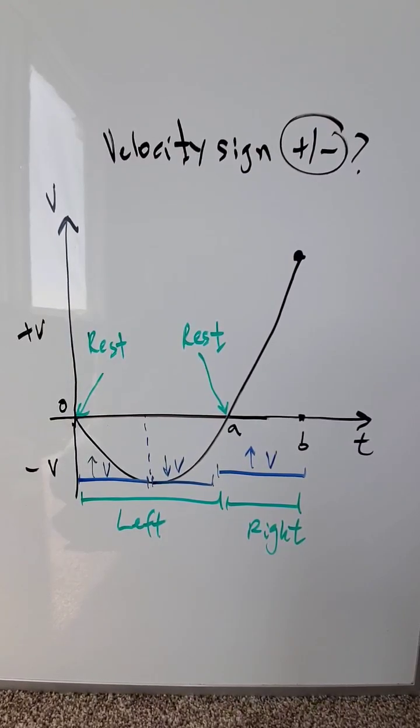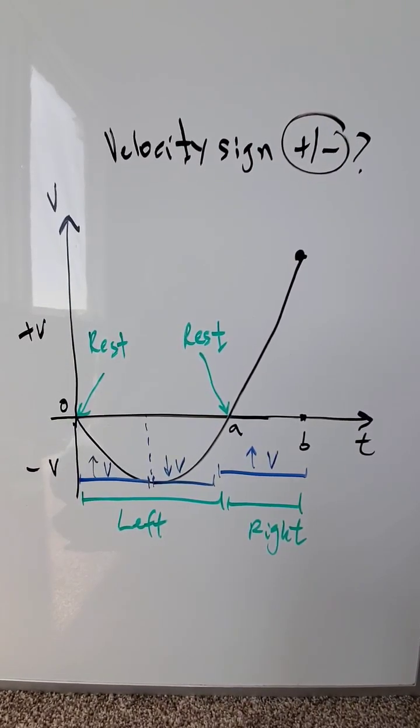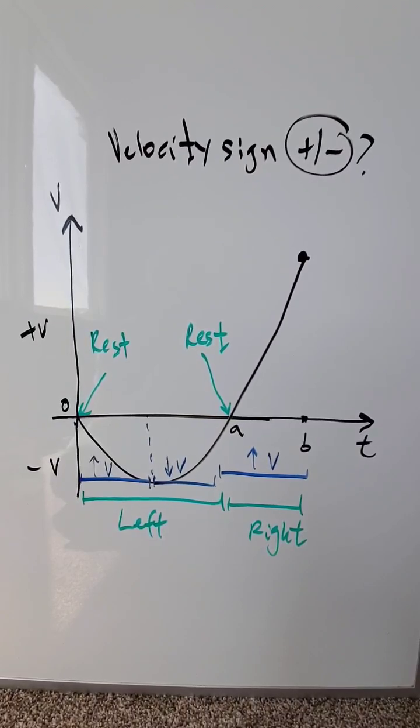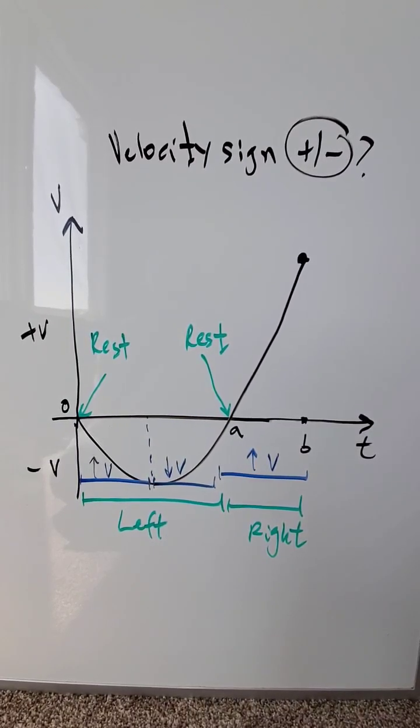When velocity equals zero, your object is at rest—it's not moving. Look at this graph of velocity and time, specifically the time interval 0 up to A. At time 0, your object is at rest, but then it starts moving.